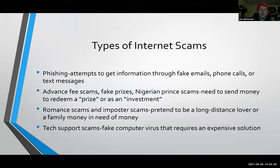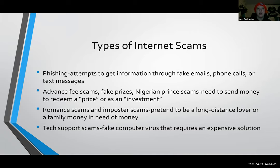First up are phishing attempts — those are emails you get. RIT sometimes sends out messages warning about them. These include random emails, texts, and phone calls pretending to be the IRS, your utilities company, or even RIT. They're basically attempts to get information, like your bank account information or your identity information so they can steal your identity.